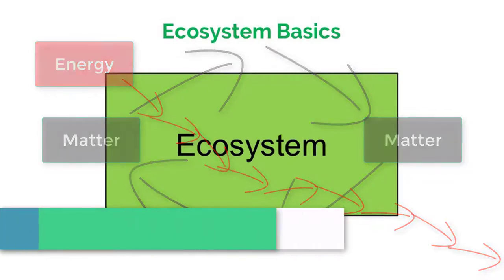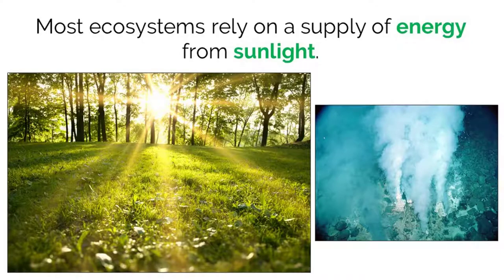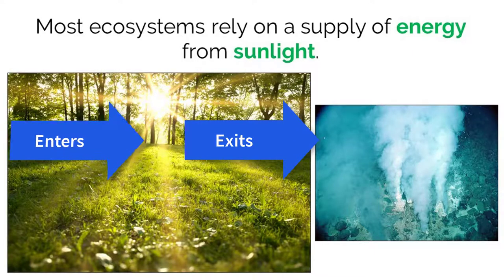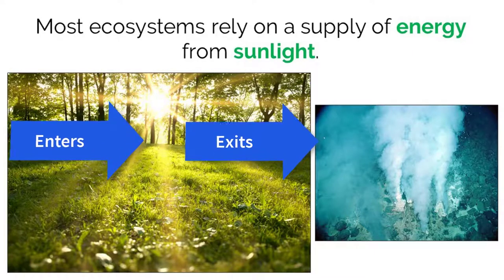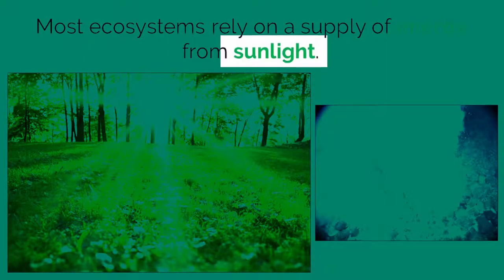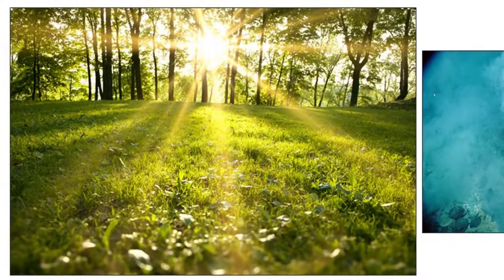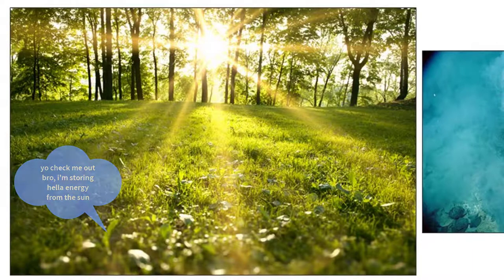Now, on to the important stuff. We now know that energy flows through ecosystems, meaning it enters and exits. So, how does it actually enter? The vast majority of ecosystems on our planet get their steady supply of energy from sunlight. The sunlight is converted into chemical energy that exists in carbon compounds through the process of photosynthesis.